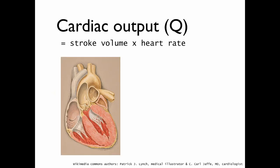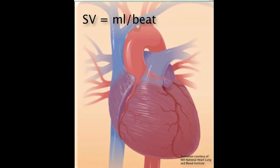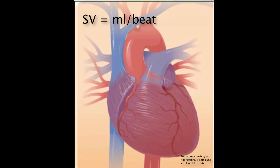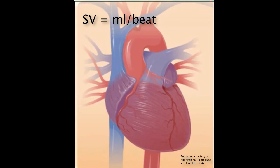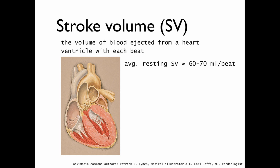Coming back to our cardiac output, it's equal to stroke volume times heart rate. We can think about stroke volume as the volume of blood ejected from the heart with each beat. The arrows depict the amount of blood leaving the heart in every beat. Sometimes more blood is ejected from the heart with one heartbeat, and that is higher stroke volume. An average resting stroke volume is between 60 to 70 millilitres per beat — the amount of blood ejected in one single contraction. We know that there is a much higher resting stroke volume seen in endurance athletes.